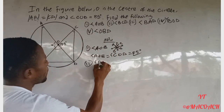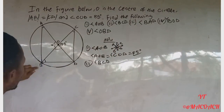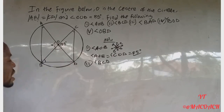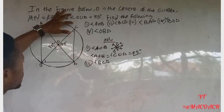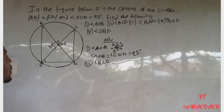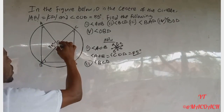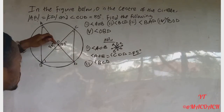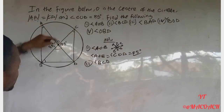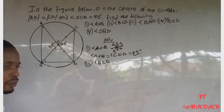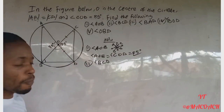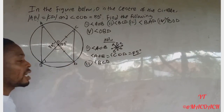For question two, we want to find angle BCD. Looking at the diagram, the center of the circle connects to the circle via radii. Since both lengths from center to the circle are radii, they are equal. This means we have an isosceles triangle, and the base angles of an isosceles triangle are equal.